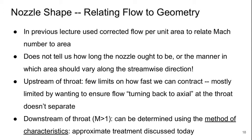We're now going to come back to an important issue in rocket nozzle design, which is basically figuring out what the shape of the rocket nozzle ought to be. This has to do with relating the flow to the geometry. In the previous lecture, we used the corrected flow per unit area equation to relate the Mach number to the area. While that's pretty accurate, it doesn't tell us anything about how long the nozzle ought to be or the manner in which the area should vary along the stream-wise direction. In other words, it doesn't tell us anything about how quickly we should be doing the contraction or the expansion in the direction of flow.